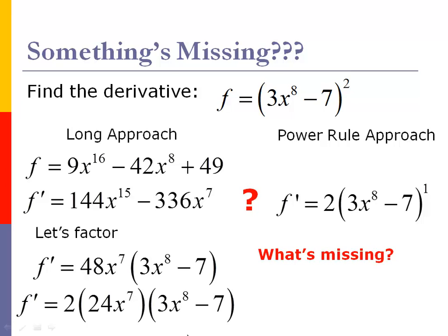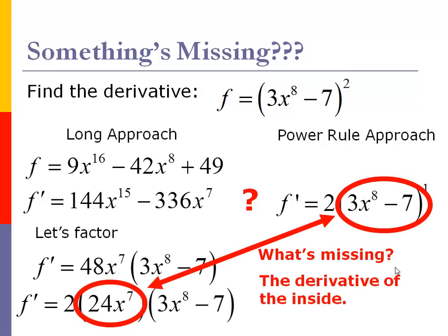So what's missing here is that when I'm looking at this, the 2's matching, the 3x to the 8th minus 7 matches. It's this 24x to the 7th that we get when we do it the long way. Is there any way to relate this 24x to the 7th to what we have over here and what we started with? And yes, there is. That 24x to the 7th is related. It's really the derivative of that inside piece. Notice it. If we take the derivative of 3x to the 8th minus 7, we would get 24x to the 7th.